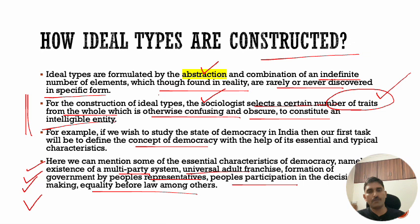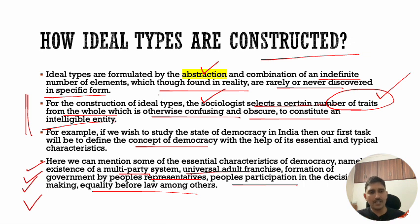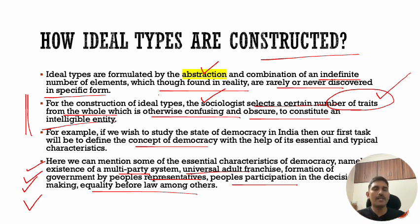Our constitution — when it was being drafted under the leadership of BR Ambedkar — what they did was choose the good practices from different countries, the good traits of democracy, select them, and then systematize them. So basically, similar to what Max Weber did theoretically in sociology, BR Ambedkar did to formulate the Constitution of India. You can understand ideal type very well through this example of the Constitution of India.